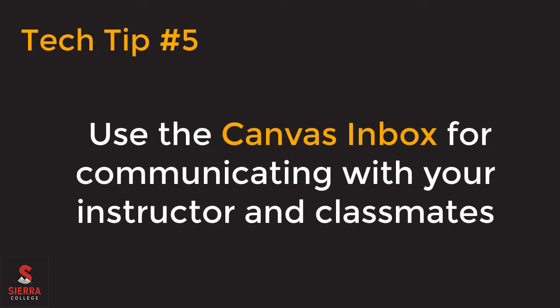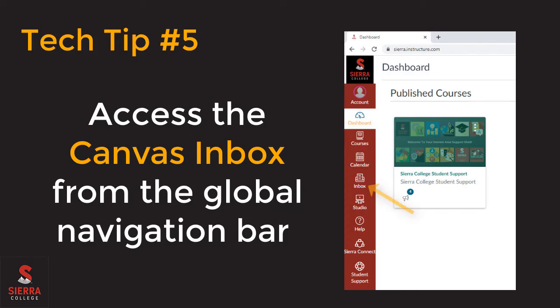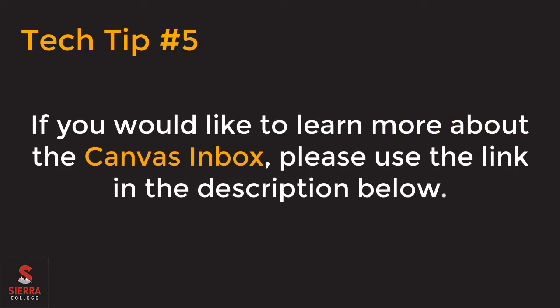Tech tip number five is to use the Canvas inbox to communicate with your instructor and classmates. You can find the inbox in the global navigation bar. The Canvas inbox is only for communication within your classes. Please be sure to check your email in My Sierra for emails from other Sierra College departments that need to contact you, like admissions, financial aid, counseling, etc. There is another tutorial video specific to the Canvas inbox features. If you would like to view that video, please use the tutorial link in the description below.